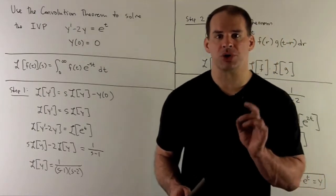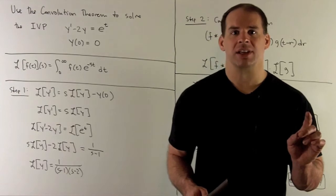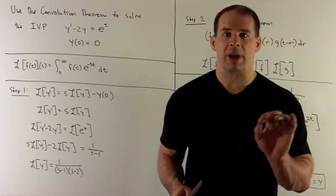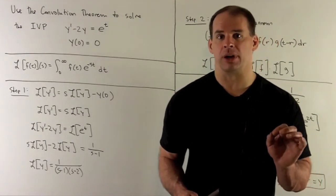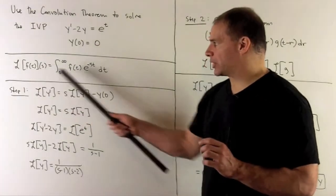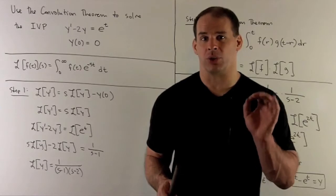Now, our approach is going to be as usual. We're going to take Laplace transform of both sides, solve for the Laplace transform of y. Normally, we would have to go to partial fractions, but instead we're going to pull out the convolution theorem. So, we write down our definition of Laplace transform. We're not going to use it here. We're going to focus on the derivative rule.